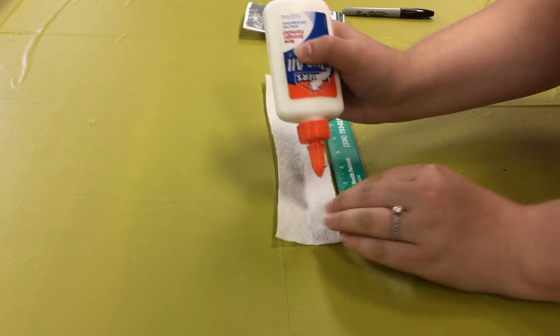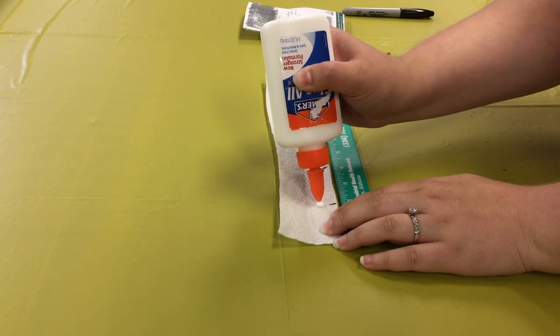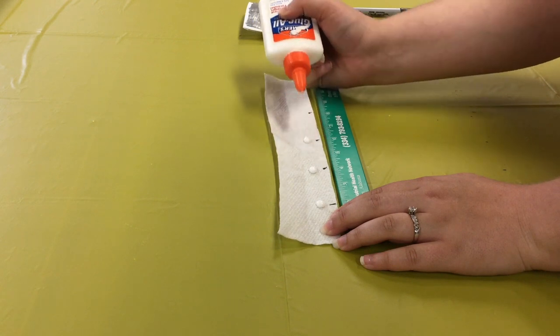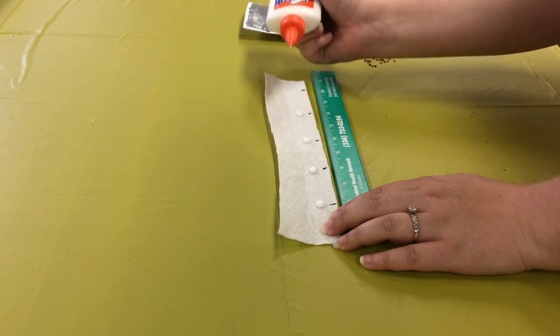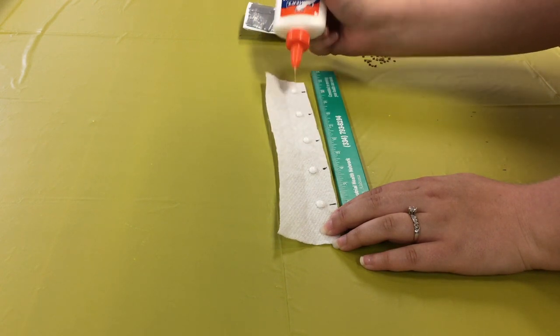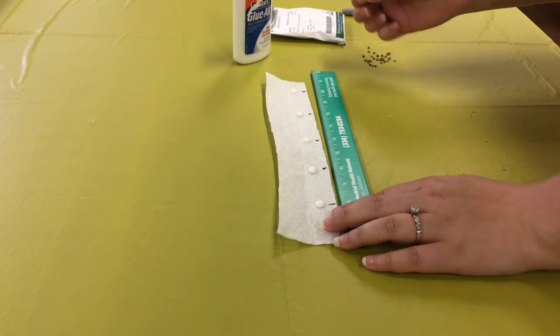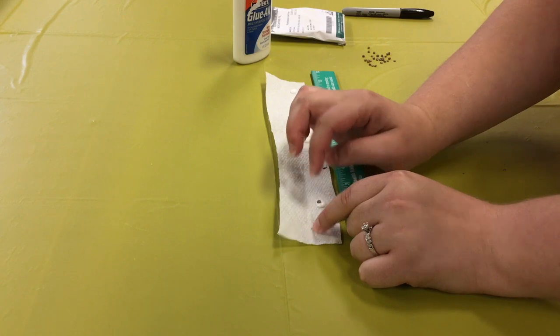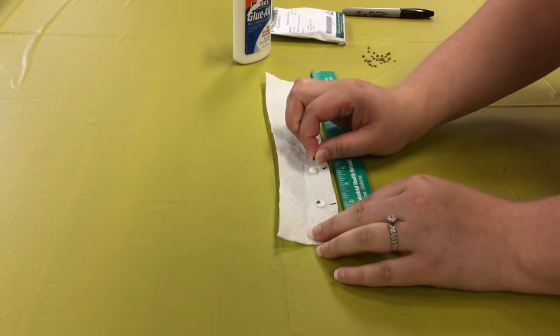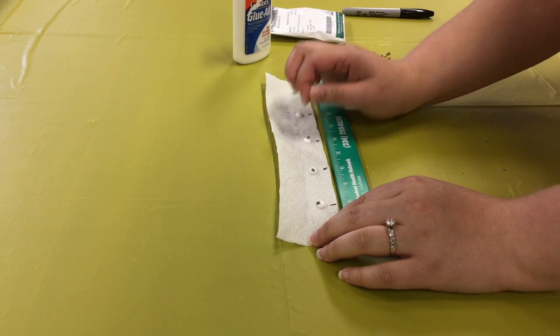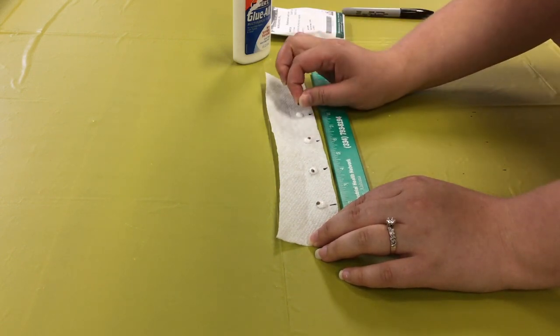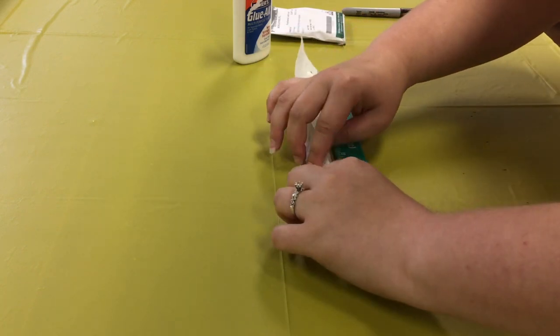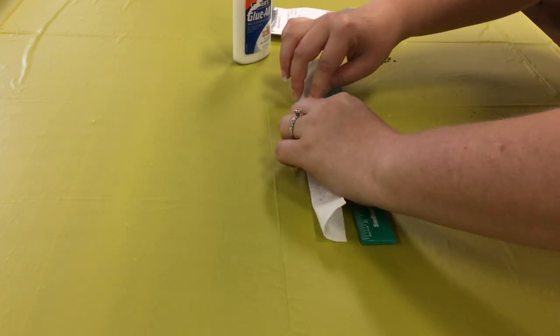Put a moderately sized drop of glue on each marking. Place a seed in each drop of glue. Fold the top half of your paper towel over the bottom half.